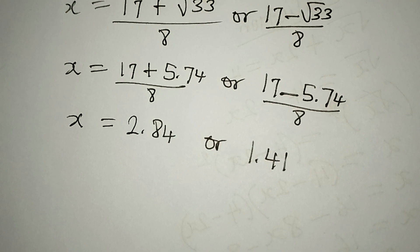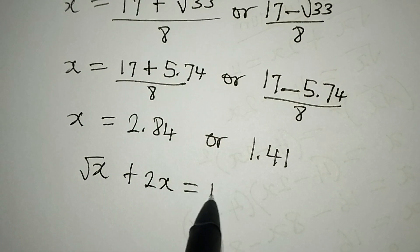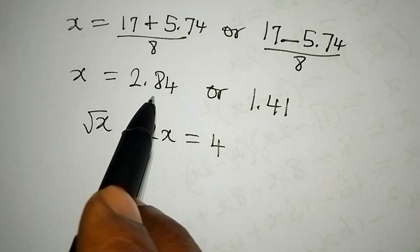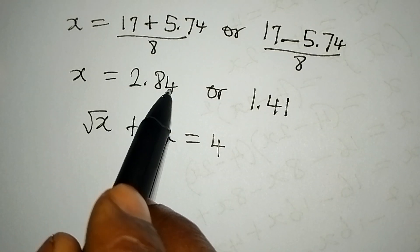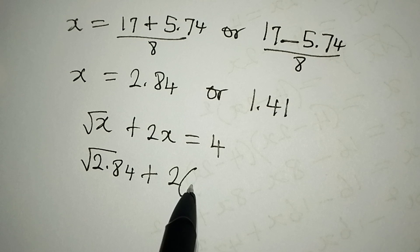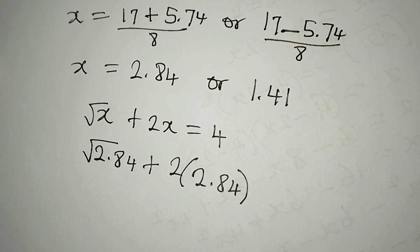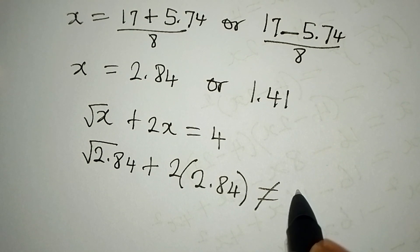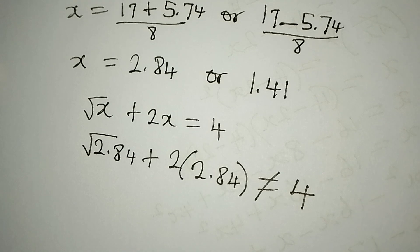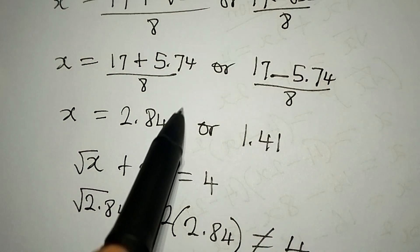Which is square root of x plus 2x equals 4. So what do we do? Let's put in the values. If I put in the value, remember the first one is 2.84, so we'll be having square root of 2.84 plus 2 multiplied by 2.84. Now will this give us 4? The answer is no, this cannot be equal to 4. And this is because if you multiply 2 by this alone, it's already more than 4, so the square root of this plus this will be way more than 4, meaning that this value of x has to be rejected.